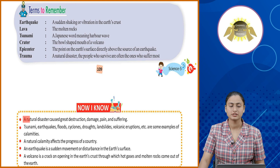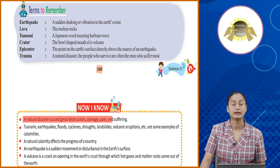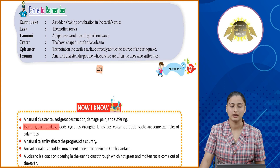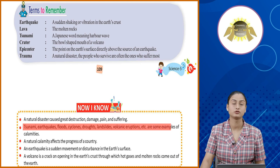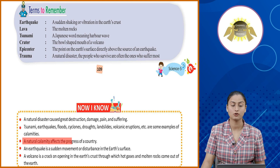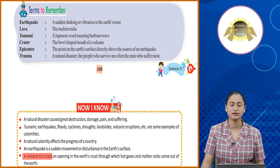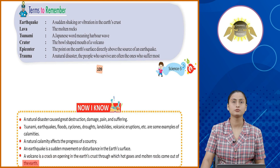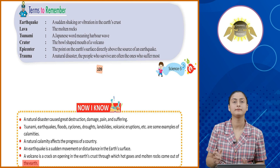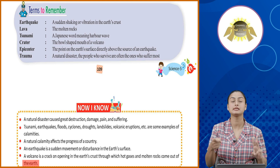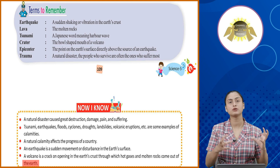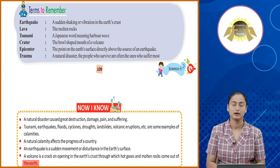A natural disaster causes great destruction, damage, pain and suffering. Tsunami, earthquakes, floods, cyclones, droughts, landslides, volcanic eruptions, etc. are some examples of calamities. A natural calamity affects the progress of a country. An earthquake is a sudden movement or disturbance in the earth. A volcano is a crack or opening in the earth's crust through which hot gases and molten rocks come out of the earth. Here comes the end of this chapter. We have seen different types of natural disasters such as landslides, tsunamis, floods, and earthquakes, and studied their consequences. Students, there are some exercises that you have to answer on your own. Thank you so much for joining me here.